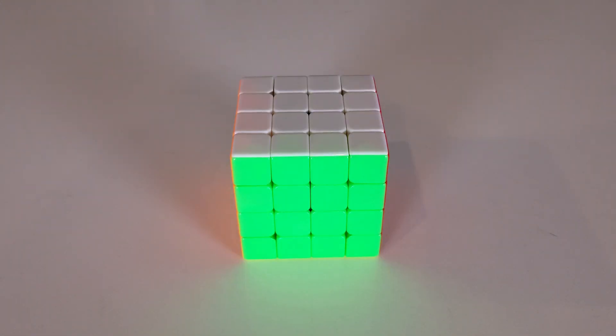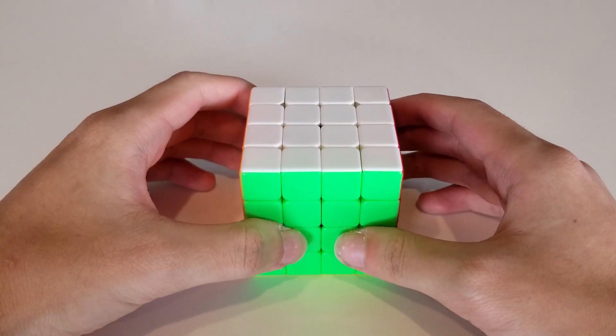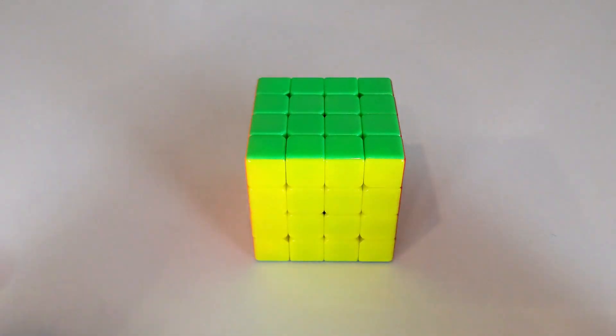To show this more rigorously, let's look at each type of move and how they affect the wing parity. First off, let's look at a full rotation, such as an X.